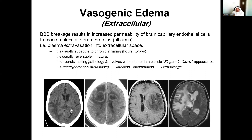Vasogenic edema occurs around a particular pathology — which may be a neoplastic process (primary or secondary), an infection or inflammatory process, or hemorrhage. It has a classic finger-in-glove appearance, sparing the overlying cortex and involving purely white matter. It interdigitates itself into the white matter surrounding and sparing the gray matter. You can see a well-defined lesion — possibly an abscess or necrotic metastasis — with surrounding edema sparing the gray matter, with mass effect on adjacent parenchyma, overlying sulci, and the nearby ventricular system.